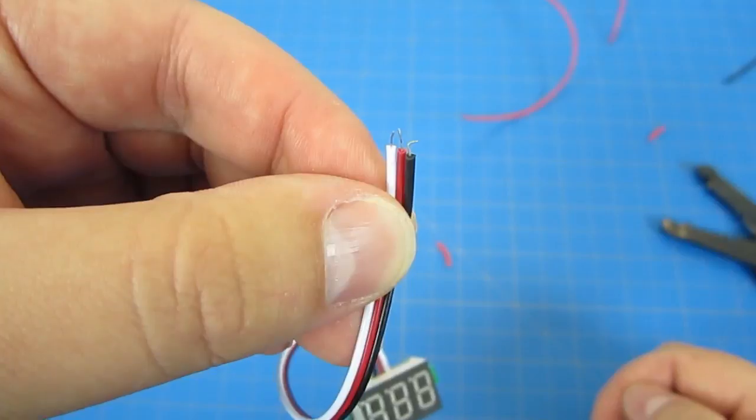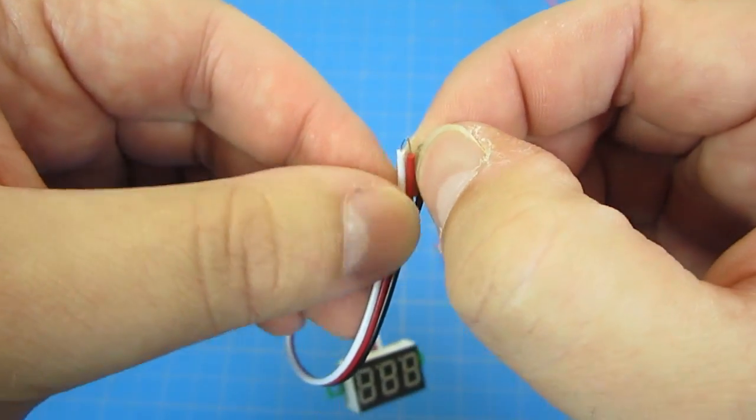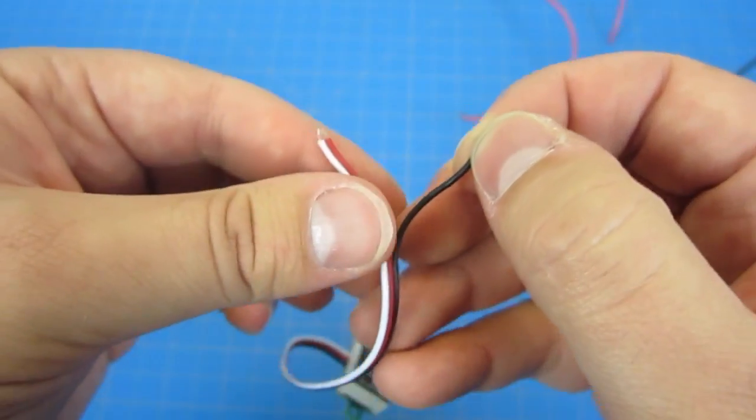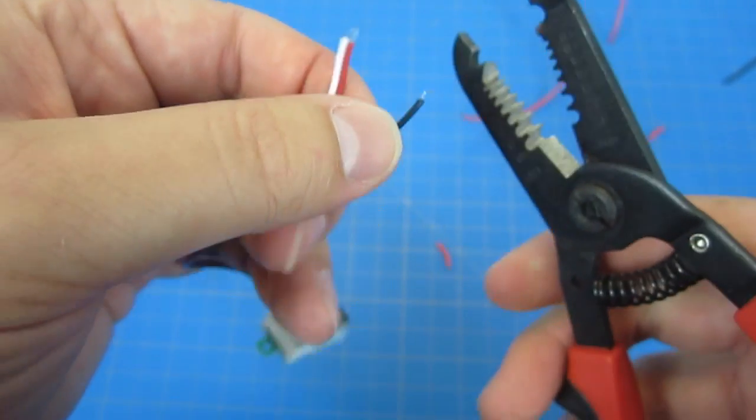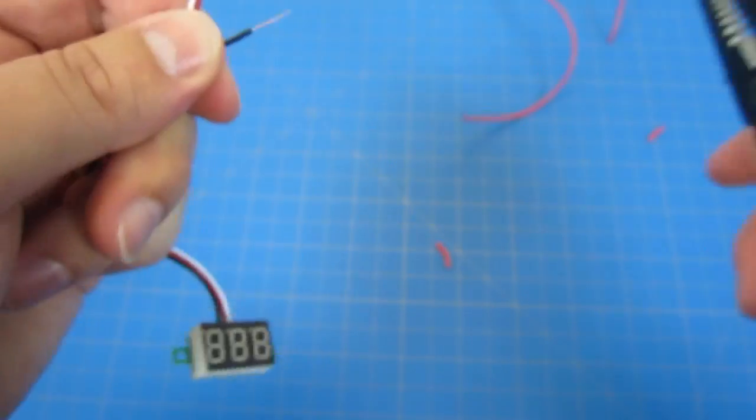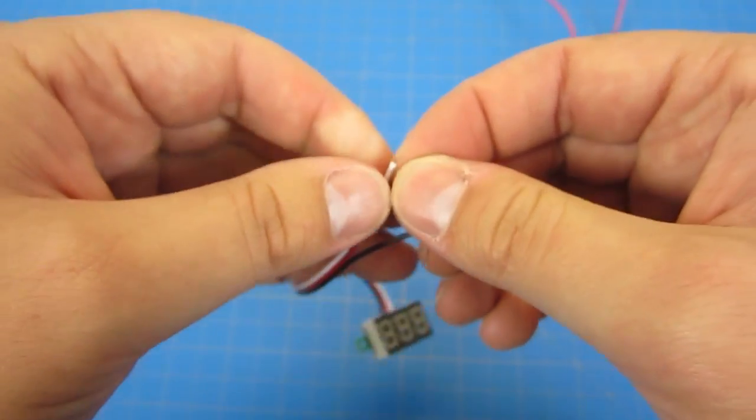Next grab your LED voltmeter. Notice there are three wires: the white and the red are both positive and the black is negative. First you want to break them apart a little bit and strip the ends. Do that for all three of the wires.